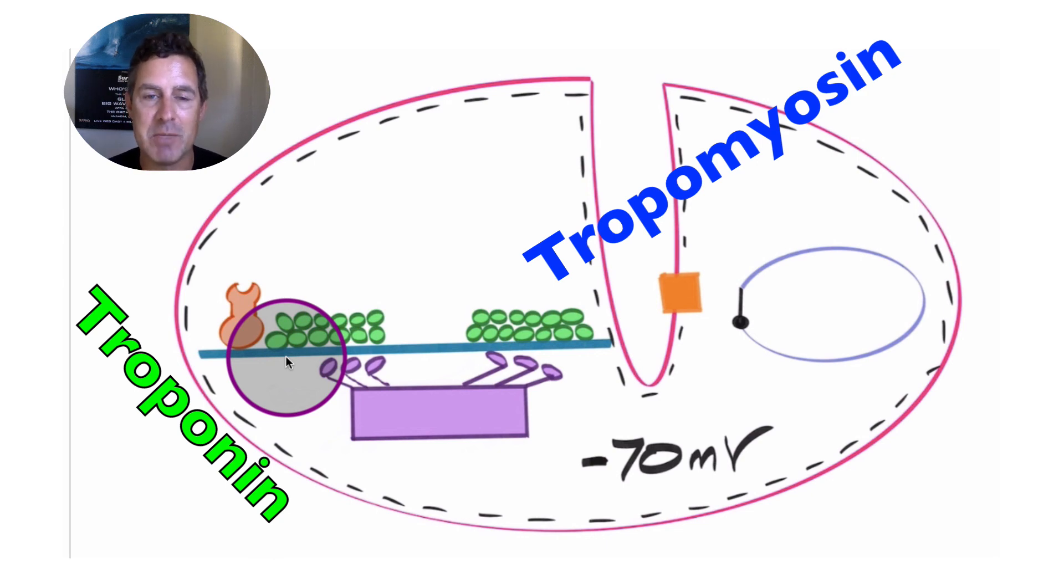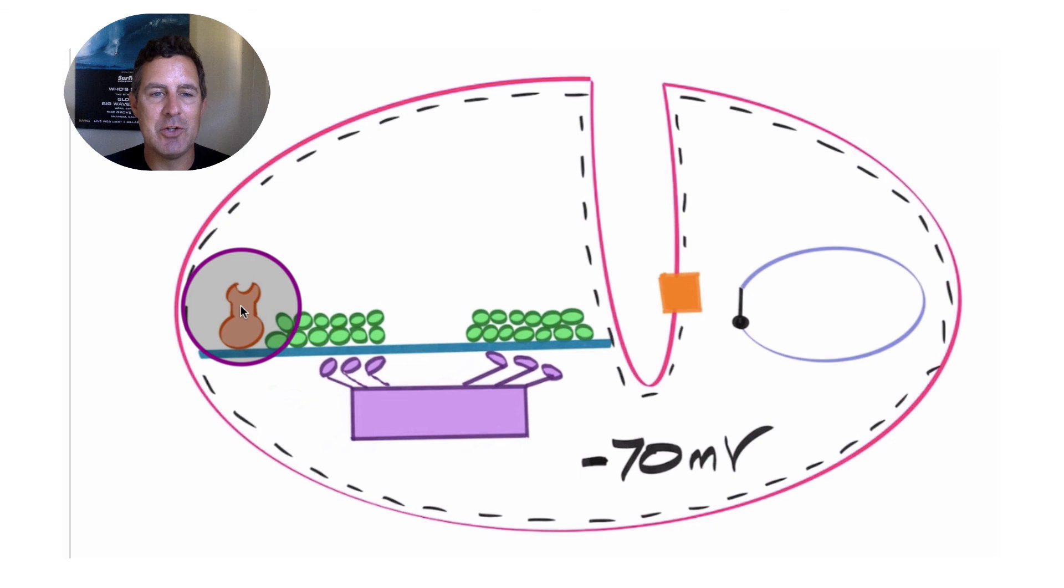If the thick filament binds to the thin filaments, we're going to get shortening of the muscle fiber, hence muscle contraction. So once again, troponin is the binding site for calcium, which is going to come from the sarcoplasmic reticulum if and when this gate, the ryanidine channel, opens. So we'll talk about all of that in detail.